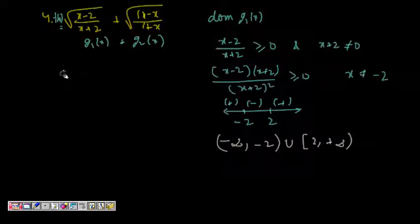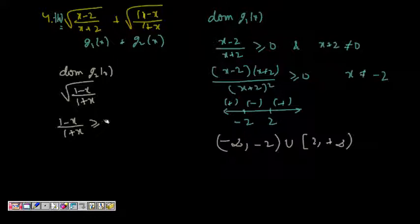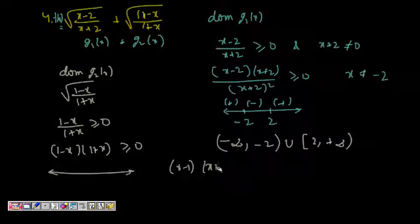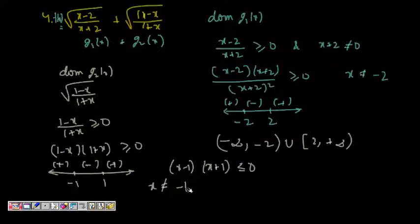For g2(x), we need (1-x)/(1+x) ≥ 0 and x ≠ -1. Multiplying by (1+x)², the inequality becomes -(x-1)(x+1) ≥ 0, or equivalently (x-1)(x+1) ≤ 0. With zeros at -1 and 1, the sign analysis gives negative, positive, positive. So the domain of g2(x) is [-1, 1] with x ≠ -1, giving (-1, 1].